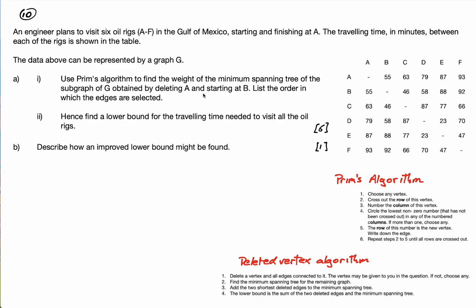Use Prim's algorithm to find the weight of the minimum spanning tree of the subgraph of G obtained by deleting A and starting at B. So this is the combined Prim's algorithm and the deleted vertex algorithm. I've brought both of these from my lessons. These are the steps on how to use Prim's algorithm and the steps on how to use the deleted vertex algorithm, just so I can refer to them easily.